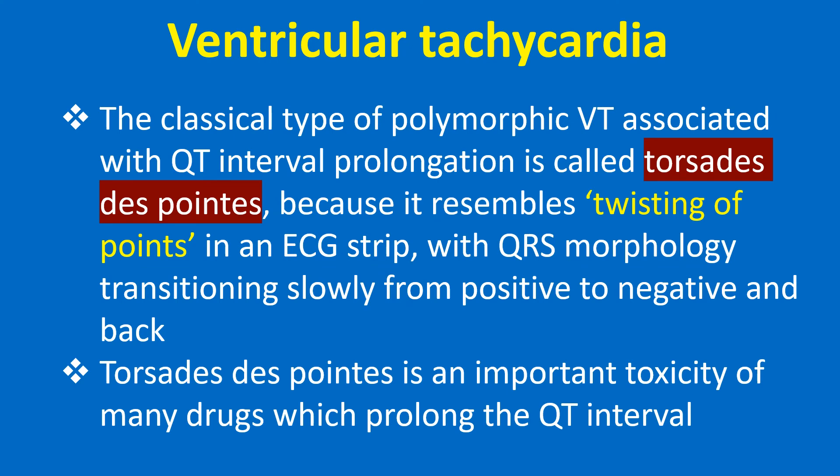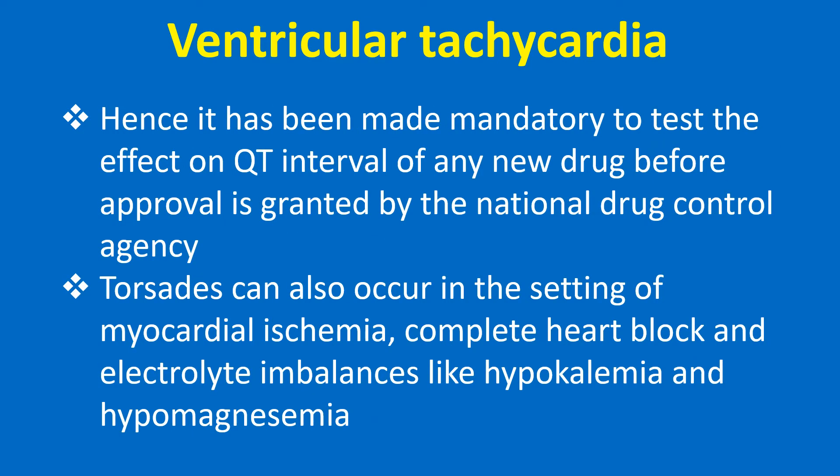The classical type of polymorphic VT associated with QT interval prolongation is called torsades de pointes, because it resembles twisting of points in an ECG strip, with QRS morphology transitioning slowly from positive to negative and back. Torsades de pointes is an important toxicity of many drugs which prolong the QT interval. Hence, it has been made mandatory to test the effect on QT interval of any new drug before approval is granted by the national drug control agency.